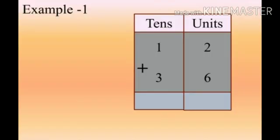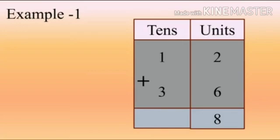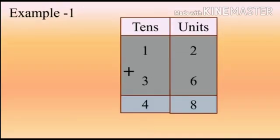Understand, children? Now next example: 12 plus 36. First, we add numbers from the units place. We have 2 plus 6. 6 is the bigger number, so count 2 numbers forward from 6 — 7, 8. So the answer is 8; write 8 in the units place. Now in the tens place, 3 is the bigger number, so count 1 number forward from 3 — the answer is 4. That means the answer is 48.